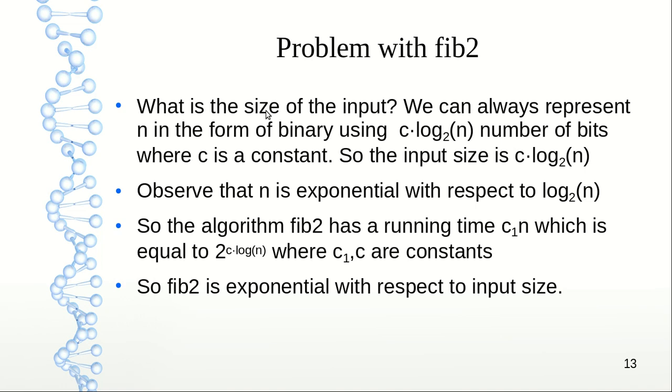In computers, when we check the running time of an algorithm, we check with respect to the input size. We can represent n in the form of binary using roughly some constant c times log n number of bits. So the input size is roughly log n. But n is exponential with respect to log n, as 2 to the power log n equals n. So basically, the fib2 algorithm is like 2 to the power input size, so it is exponential with respect to input size.